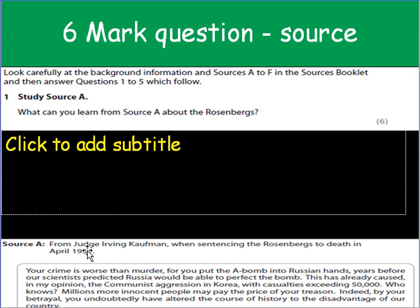This is from Judge Ervin Kaufman when sentencing the Rosenbergs' death in April 1951. He says: 'Your crime is worse than murder for you put the A-bomb into Russian hands, years before our scientists predicted Russia would be able to perfect the bomb. So this has already caused, in my opinion, the communist aggression in Korea with casualties exceeding 50,000. Who knows? Millions more innocent people may pay the price of your treason. Indeed, by your betrayal you undoubtedly have altered the course of history to the disadvantage of our country.'